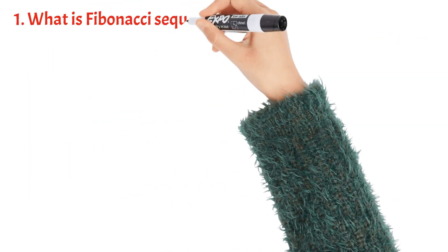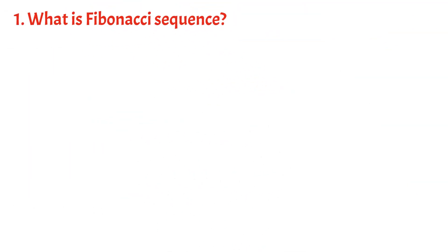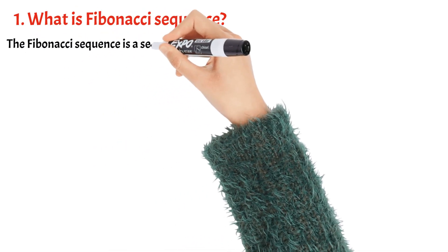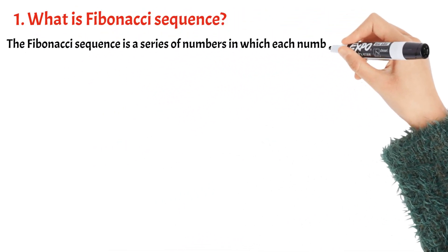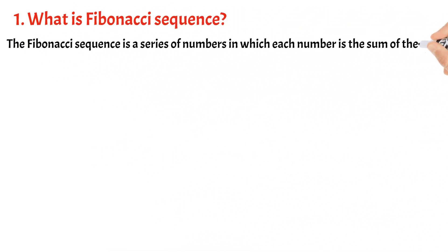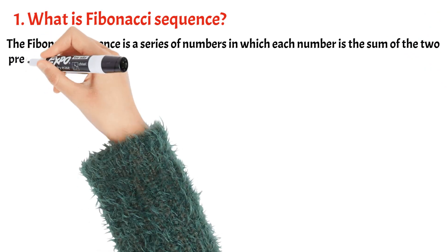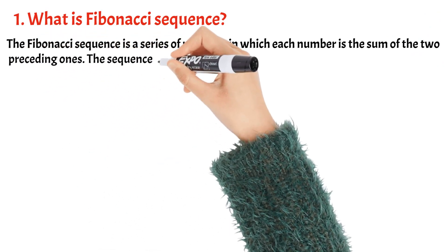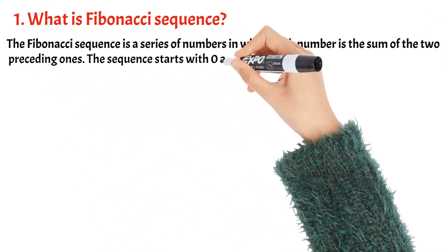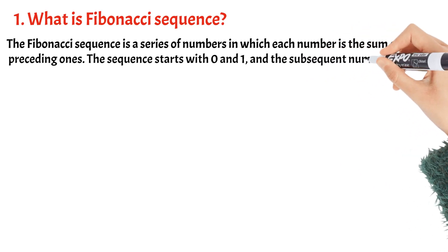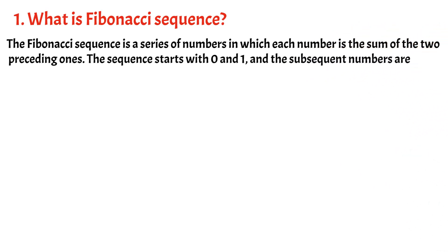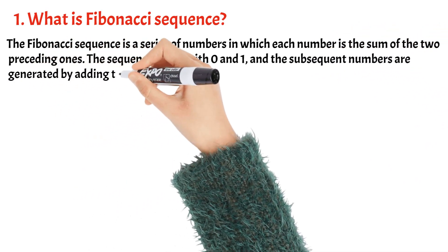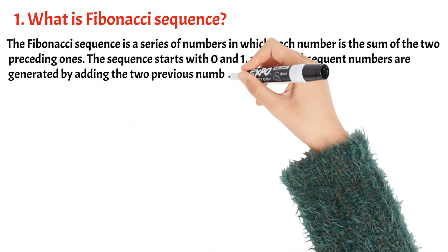What is Fibonacci Sequence? The Fibonacci Sequence is a series of numbers in which each number is the sum of the two preceding ones. The sequence starts with 0 and 1, and the subsequent numbers are generated by adding the two previous numbers.